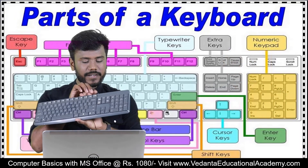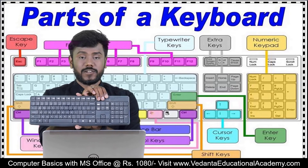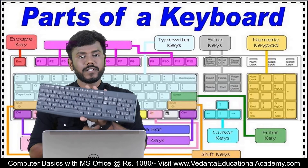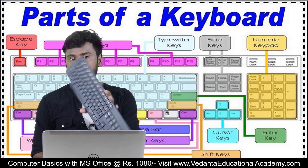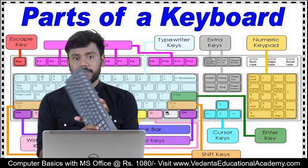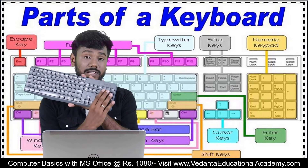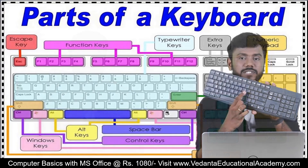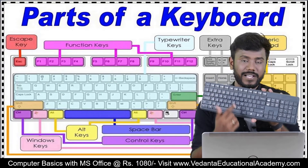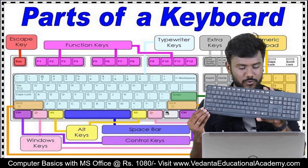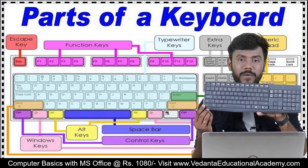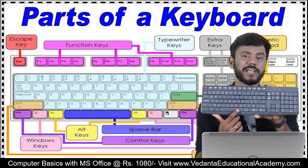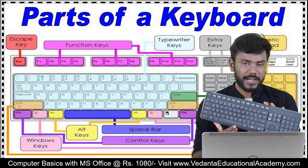Next to the function keys, you have extra keys such as Home, Insert, Page Up, Page Down, and Delete. Below those are the arrow keys — right, left, up, and down — known as navigation keys. There is also a specially designed numeric keypad. You have A to Z and 0 to 9 keys, all known as typewriter keys. At the bottom, you have the Control, Windows, and Alt buttons, along with the spacebar.